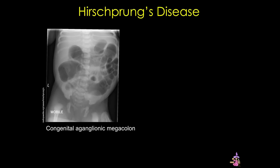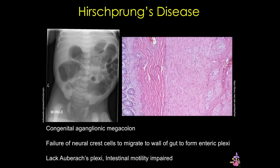Another congenital pathology is Hirschsprung's disease, where neural crest cells fail to migrate to the intestinal wall during development. As a result, as you can see in this radiograph, you get an increased size of the colon, or megacolon. The myenteric plexi fail to form, and so chronic constipation and dilatation of the colon — megacolon — can occur.